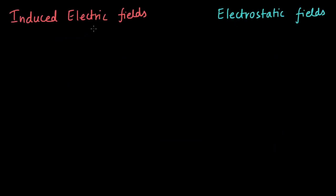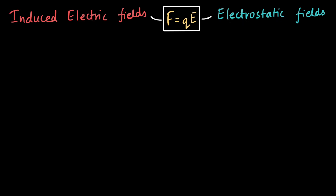Alright, first of all, an induced electric field is an electric field at the end of the day. So by definition, F equals QE is valid even for this field, just like it is valid for an electrostatic field. It's just that if we have an electric field due to a static charge and one due to a changing magnetic field, they look different — but they are still both electric fields.